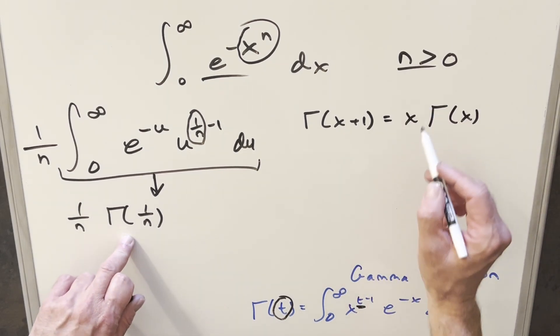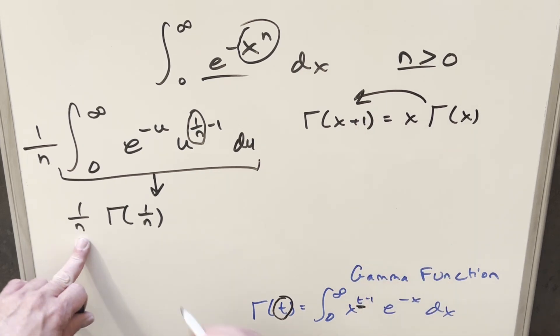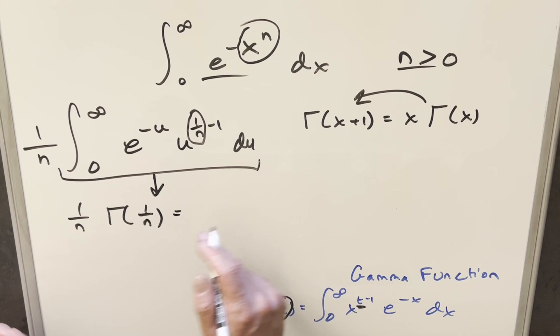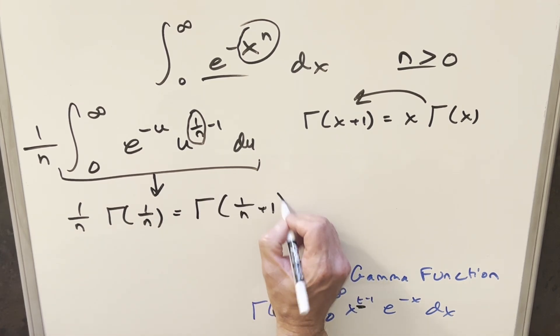So what we can do is use it in the other direction because 1 over n, these values are the same. That's like our x here. So I can write this as our x plus 1. We can write this as gamma of (1/n + 1).